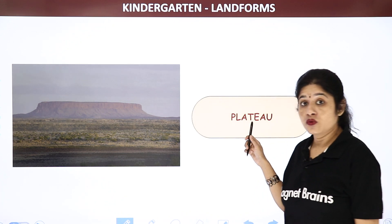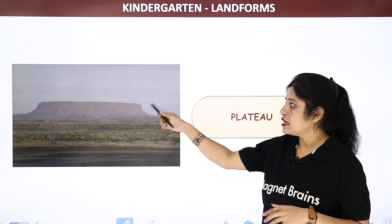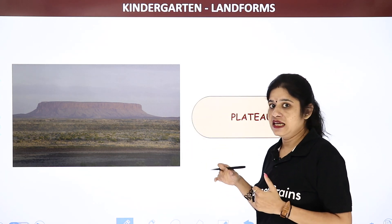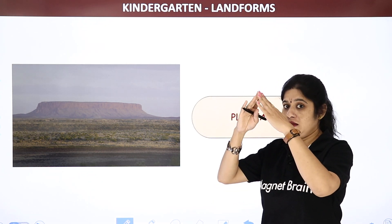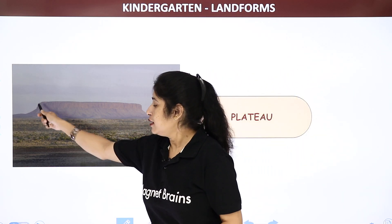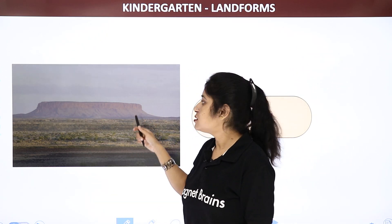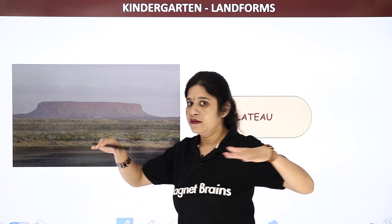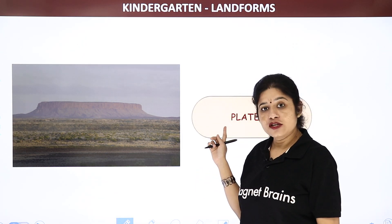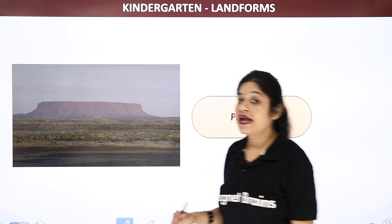This is a plateau. This is also at a high distance from the land. These are also a type of mountain, but as we have seen, mountains are having peaks at the top. But can you see in this picture? Plateaus are having a broad, flat structure on the top. The plateaus are broad and flat at the top — they are not having a peak. So mountains are having a peak and plateaus are not having a peak; the plateaus are broad and flat.